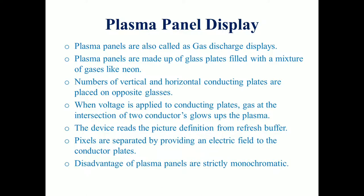The plasma panel contains fluorescent material and neon gas, and is made up of glass plates. Numbers of vertical and horizontal conducting plates are placed on opposite glass plates. When voltage is applied to the conducting plates, the gas at the intersection of two conductors glows up the plasma.